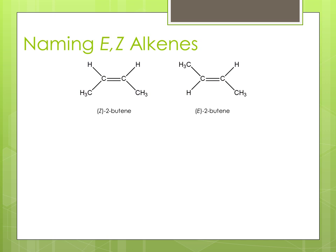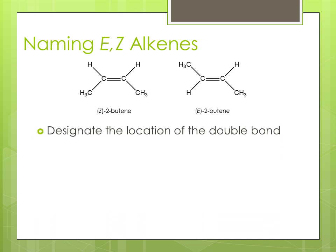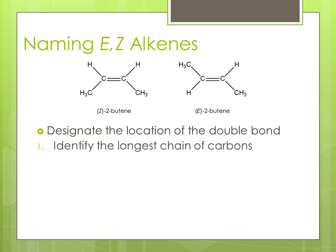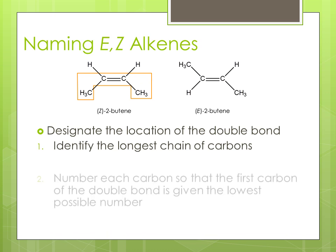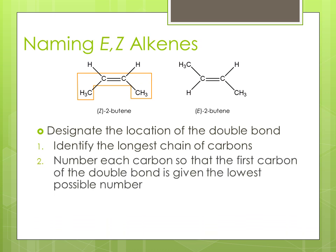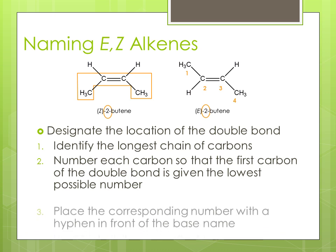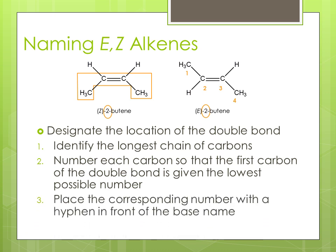Naming E/Z alkenes is very systematic. Designate the location of the double bond first. Then identify the longest carbon chain. Number each carbon so that the carbon on the double bond is given the lowest possible number. Then place the corresponding number with a hyphen in front of the base name.